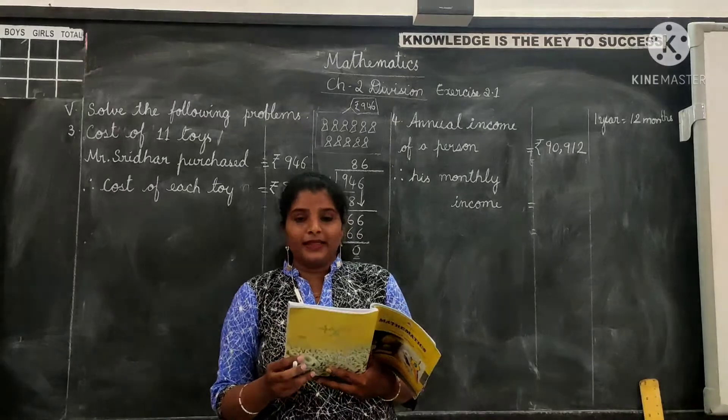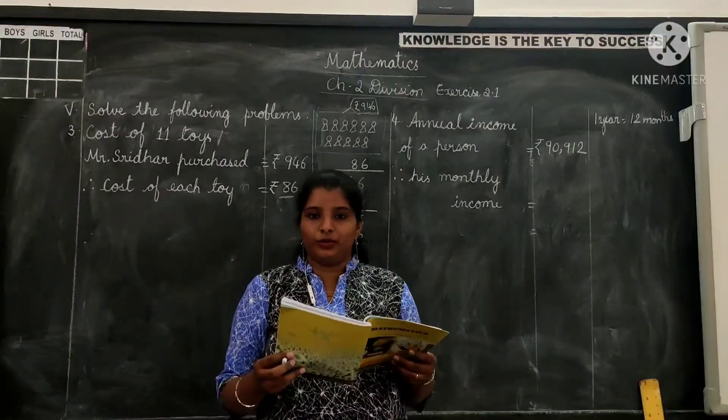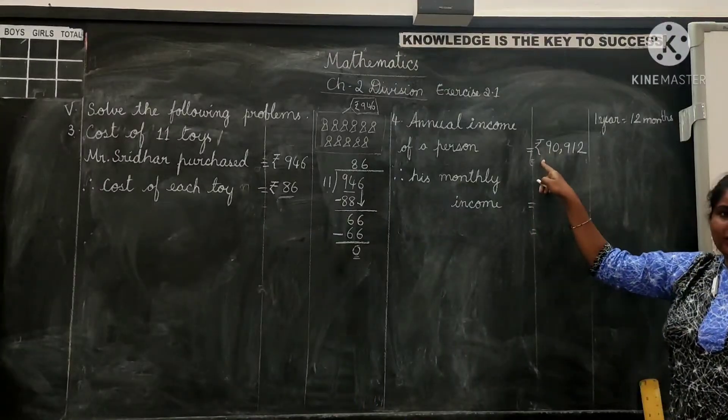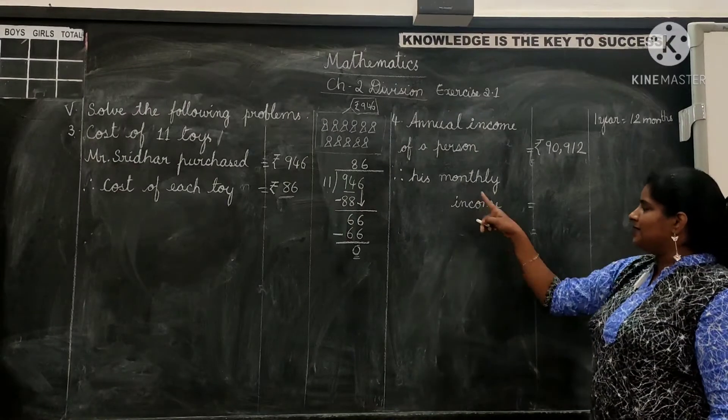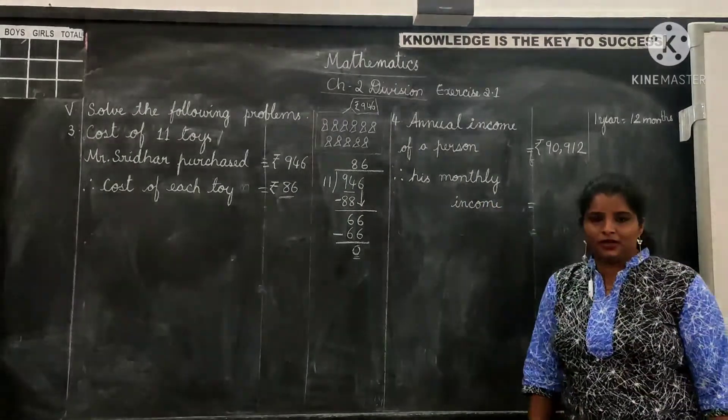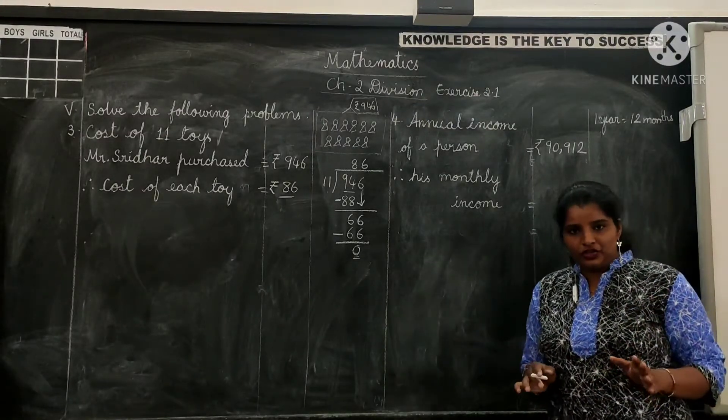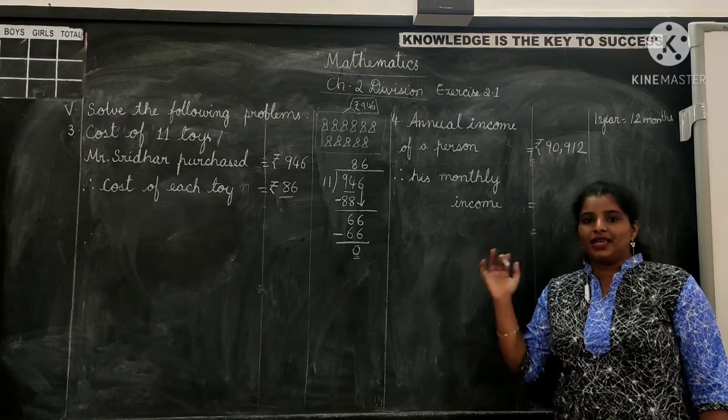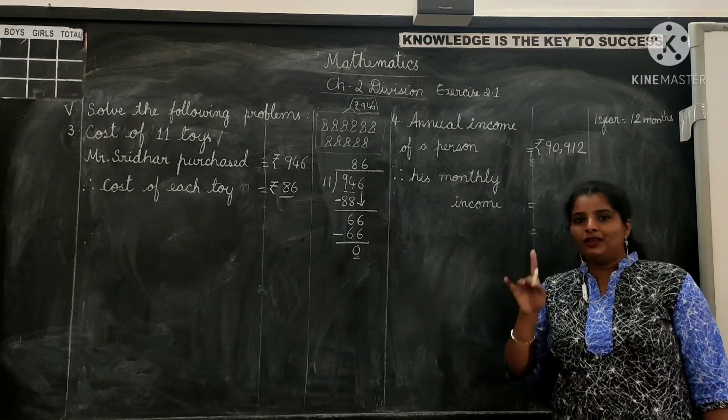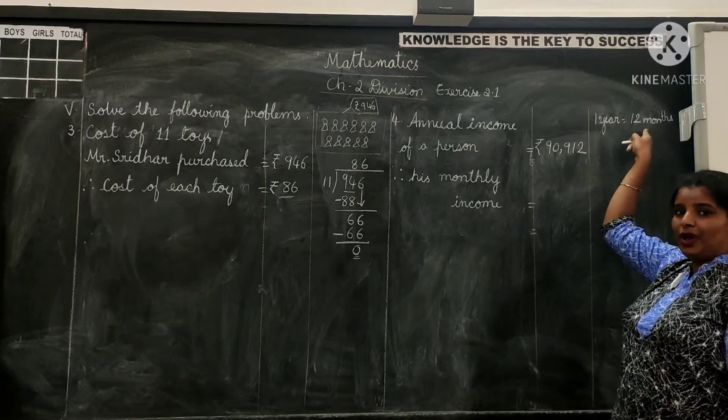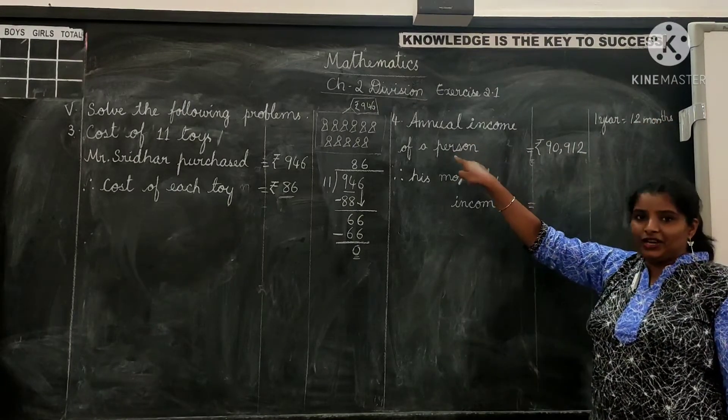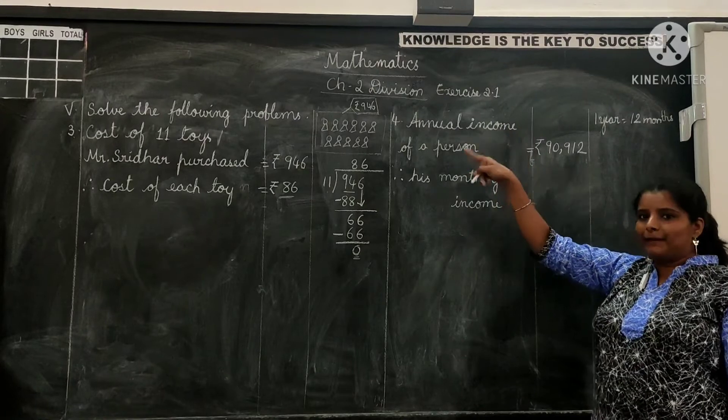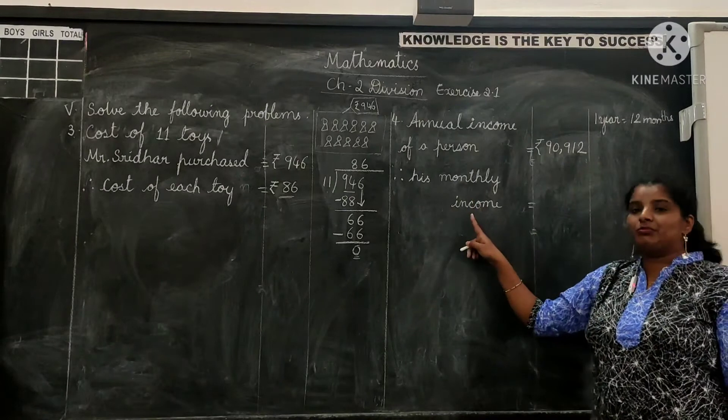Let's solve the 4th problem. The annual income of a person is 90,912 rupees. Find his monthly income. First let us have a look at the statement. So rupees 90,912 is the annual income of a person. We are supposed to find his monthly income. What do you mean by annual income? First you should know. Here you should know what do you mean by annual income. Annual income is yearly. Annual income means the money that he earns in 1 year. So 1 year which means 12 months. So annual income of a person, or the amount that he earns in 12 months, is 90,912 rupees. So what is his monthly income?